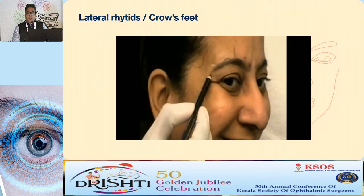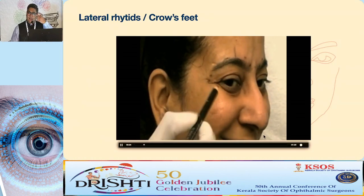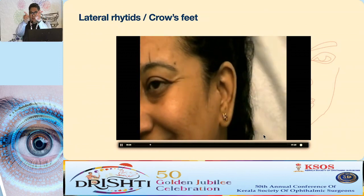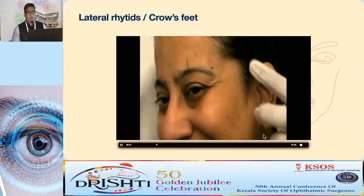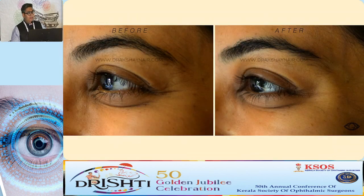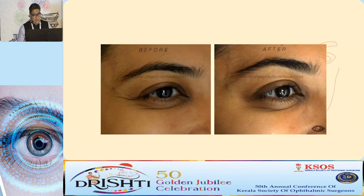For crow's feet — prominent creases at the lateral canthus that look like a crow's paw when smiling — injecting 4-5 units of Botox in that corner works very well. These lines disappear with treatment. Crow's feet injections last 3-4 months and are all OPD procedures — no need for the operating theater. By injecting just under the eyebrow into the orbicularis, we can create an eyebrow lift, giving a gentle temporal lift.